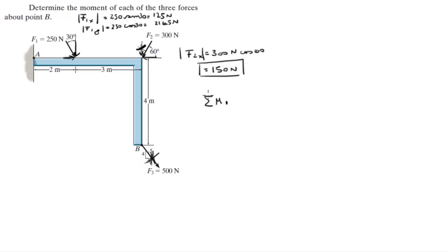So the moment that the first force creates about point B, which is this one right here, assuming clockwise is positive, is equal to the Y component going straight down, which is turning this lever arm right here with a length of 3 meters. Therefore it's 216 newtons times 3 meters.